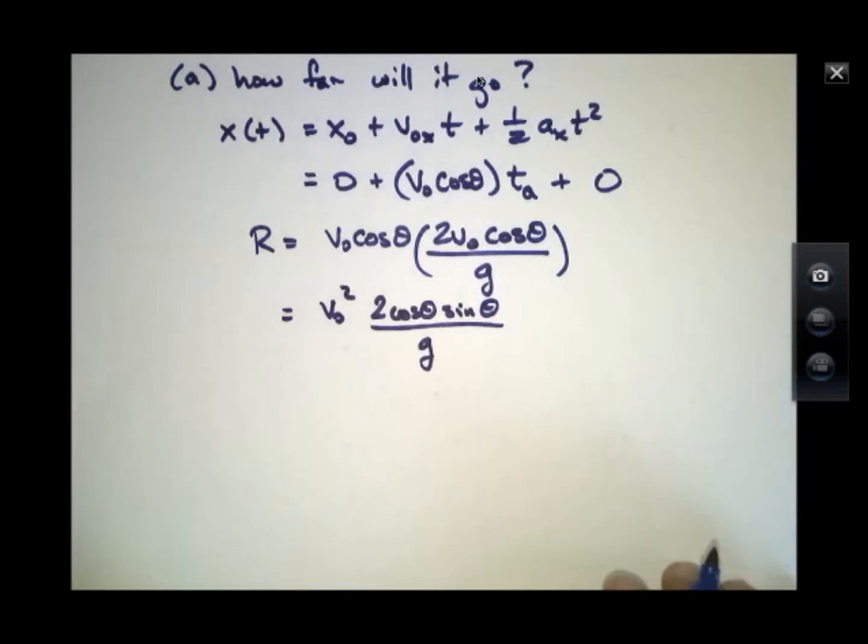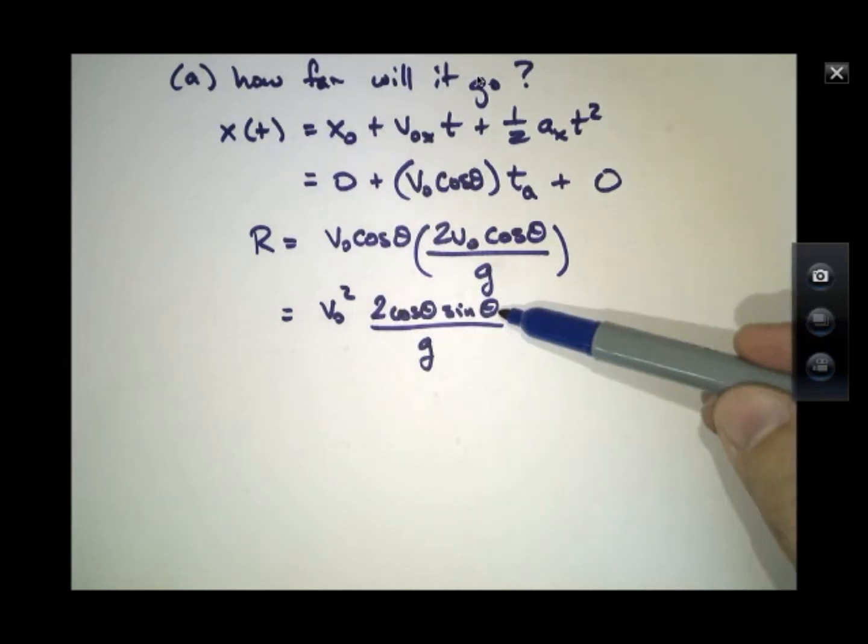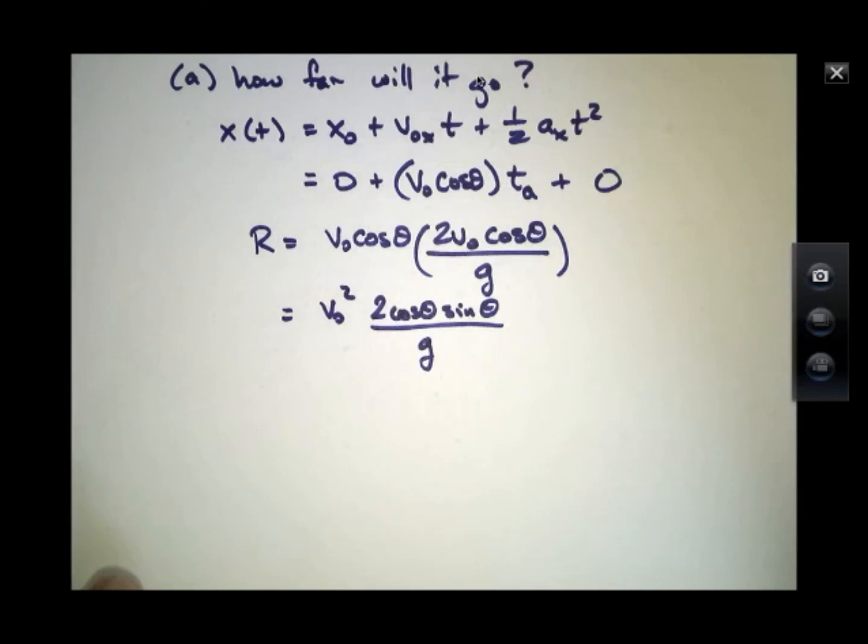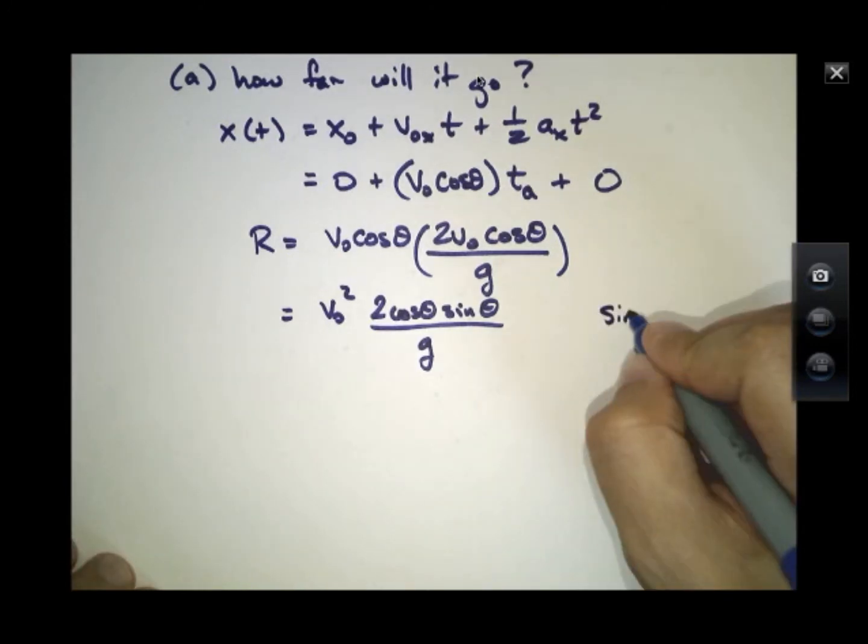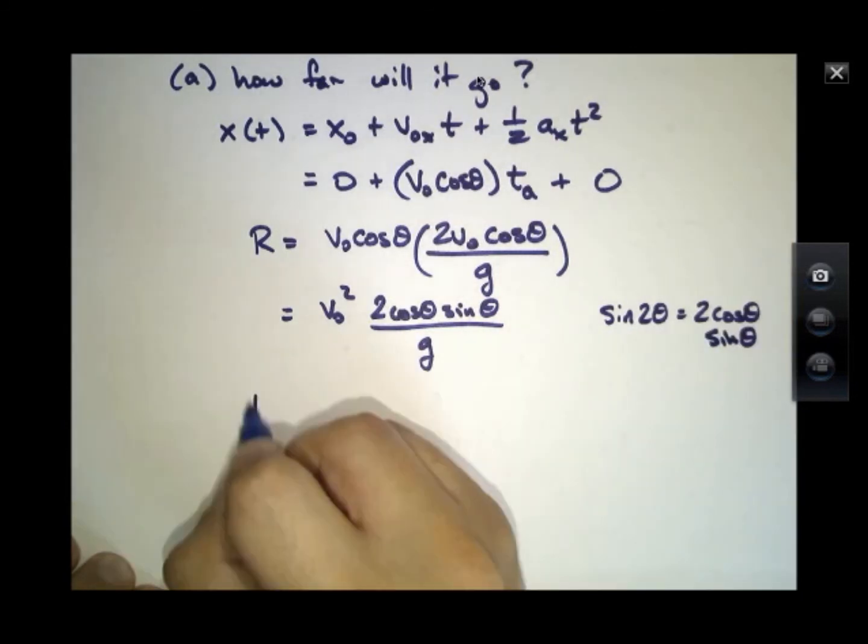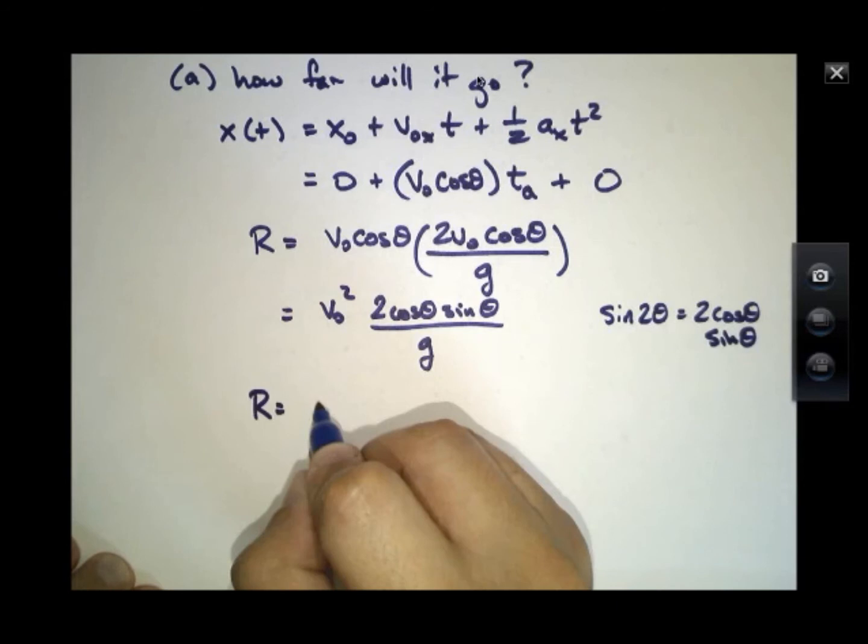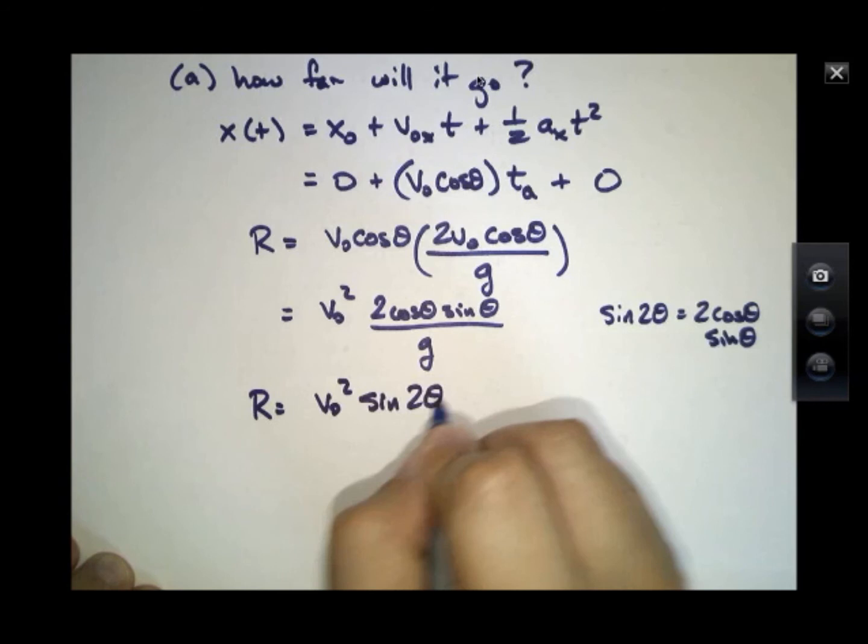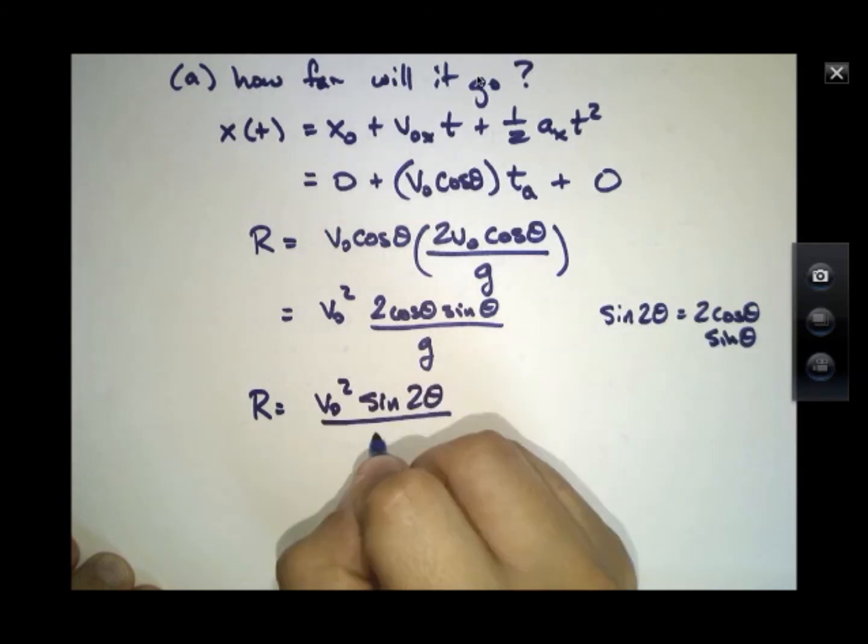And there's an expression that the range equals v0 squared times 2 cosine theta times sine theta divided by g. Now I'm going to use a trig identity that sine of 2 theta equals 2 cosine theta times sine theta, so that the range is v0 squared sine 2 theta over g.